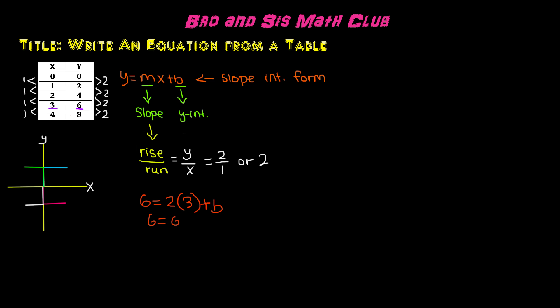6 equals 3 times 2, which is 6, plus b. Subtract 6, and we get 0 equals b. That means the y-intercept of this equation is 0. Our equation is going to be y equals 2x plus 0, or y equals 2x. And this is the equation for this table.